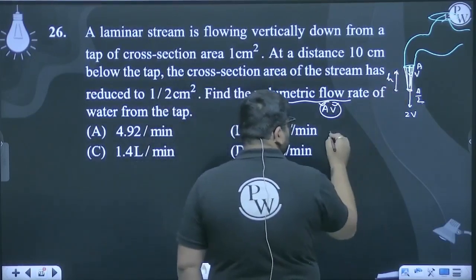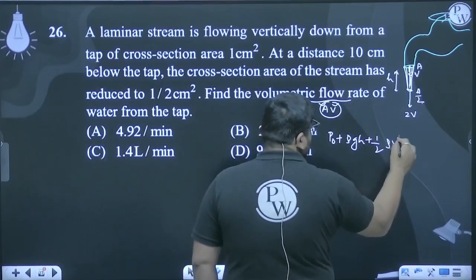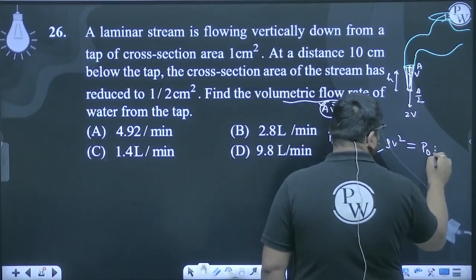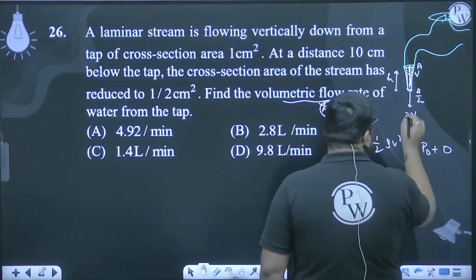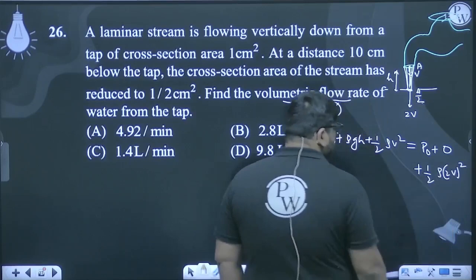Here the pressure is atmospheric pressure P₀ plus ρgh plus half ρv² equals - here the pressure is P₀ itself, ρgh term becomes zero if we take this as reference level, plus half ρ into (2v)².